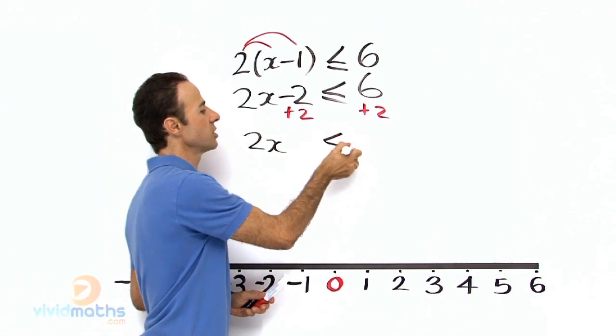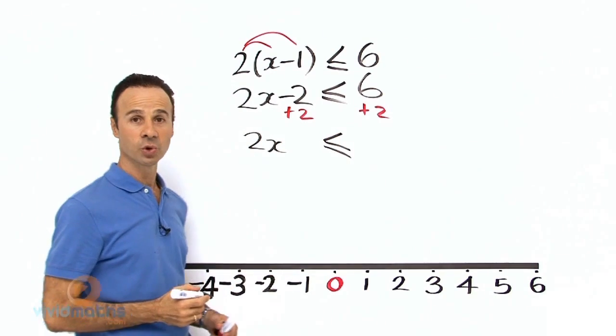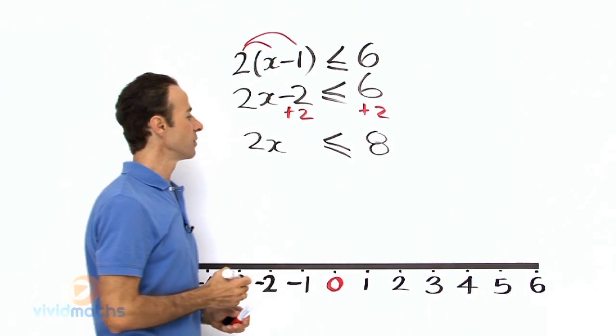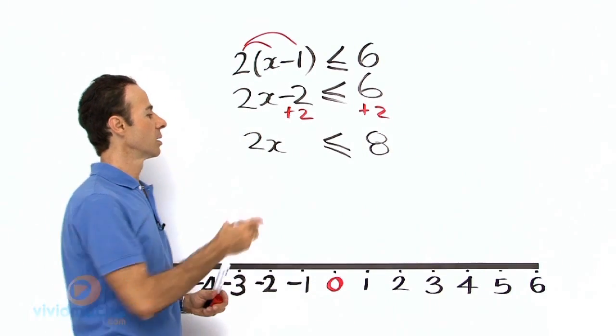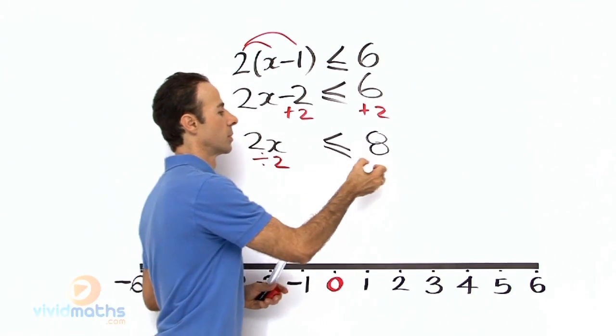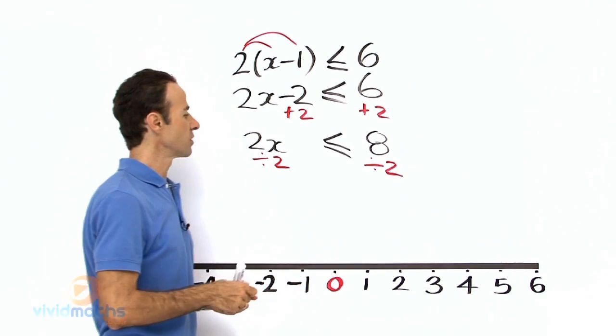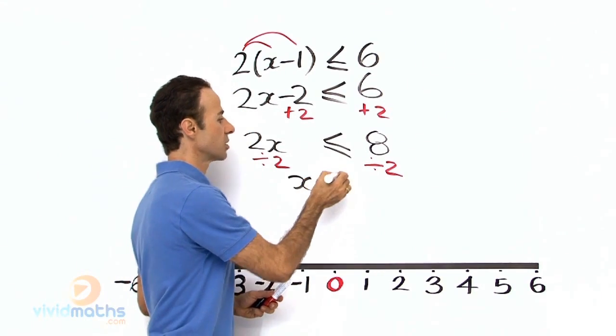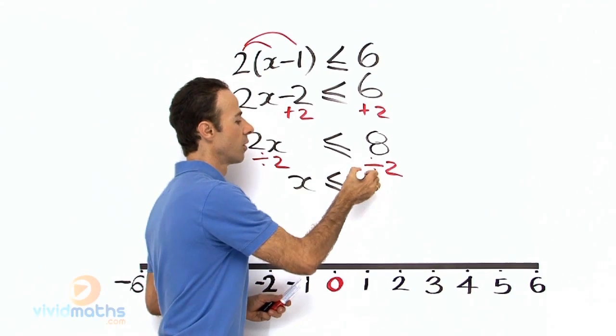2x less than or equal to 6 plus 2 is 8, and divide both sides by 2. That gives us a grand total of x, 2 divided by 2 is x. x is less than or equal to 4.